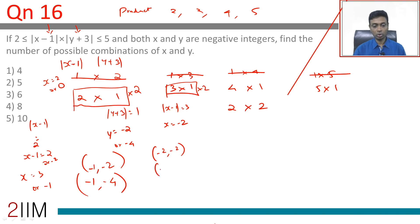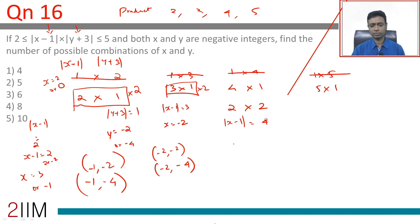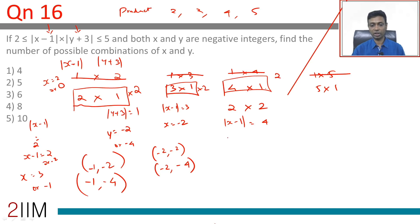For 4×1: |x-1| = 4, so x = 5 (not valid) or x = -3. x = -3 works. |y+3| = 1 gives two possibilities. So we have (-3, -2) and (-3, -4).